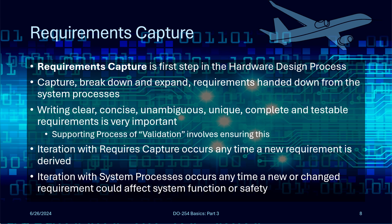The supporting process called validation ensures that the requirements are captured well and meet all this criteria. It's important to note that there are iterations to this process — during design, the team may realize some requirements are missing or need to be tweaked. When this happens, those new or modified requirements need to go through the process again, and they also need to be fed back to the system level for review to ensure they aren't changing any functions or causing adverse safety impacts.